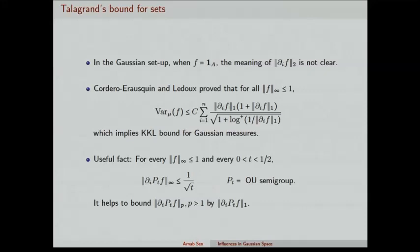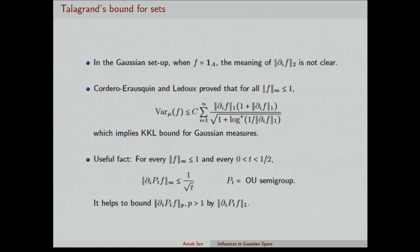The earlier proof of this uses hypercontractive bounds. The key insight is: if you have a bounded function, you can't bound the derivative in the L-infinity norm directly. But if you smooth it by applying the semigroup — for example, the Ornstein-Uhlenbeck semigroup — you can bound the derivative in the L-infinity norm by some constant, paying a price of 1 over square root t. This is helpful in bounding the L-infinity norm of the derivative of the smoothed function by the corresponding L¹ norm. That's the essence of their proof.